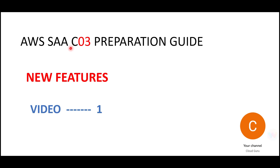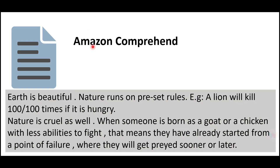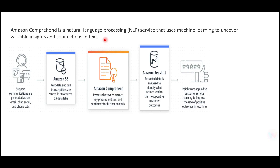Let us understand the concepts of the new features. Amazon Comprehend — this is one of the features which is a new addition. You will be quizzed around this. It was previously part of the Machine Learning certification, but they have also added it to the Solution Architect Associate. It is a natural language processing service which uses machine learning under the cover.